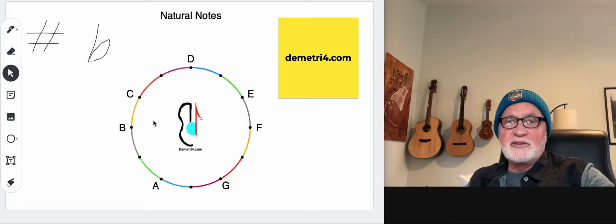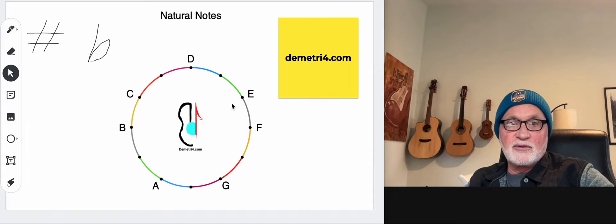So as you're looking at the natural note circle here, you're going to see 12 dots. One, two, three, four, five, six, seven, eight, nine, ten, eleven, twelve. And then they repeat.